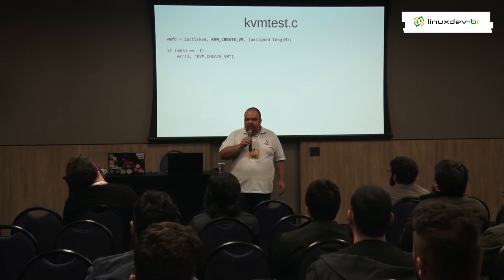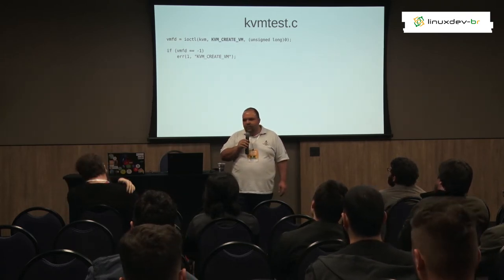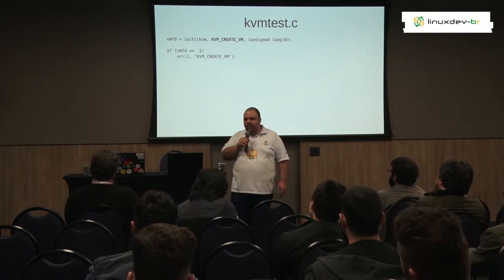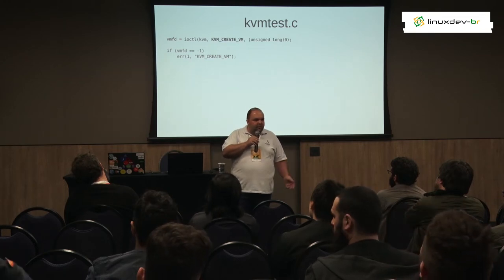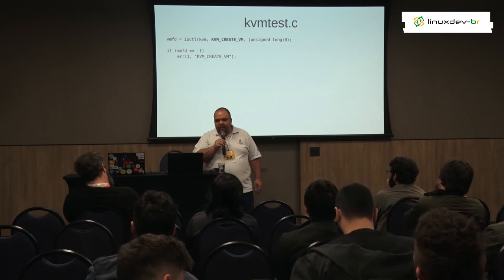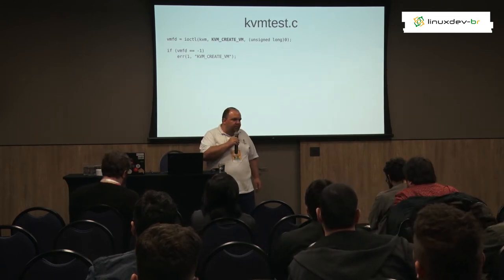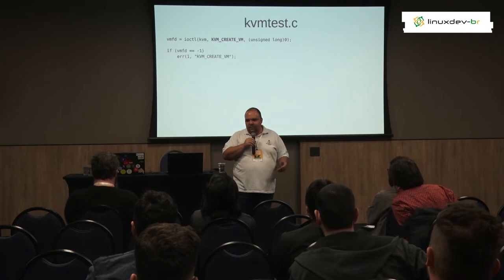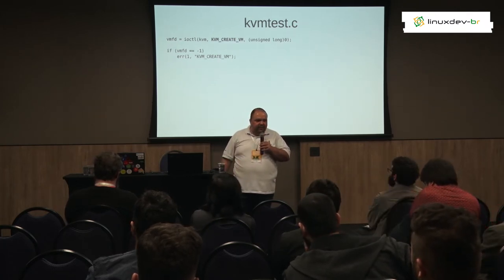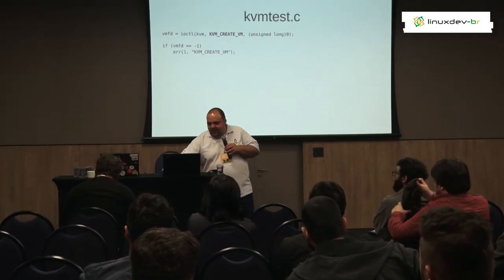The next API call is KVM_CREATE_VM, which affects the whole subsystem of KVM by creating virtual machine structures in the kernel. This API returns a virtual machine file descriptor. You need to keep track of this virtual machine file descriptor, or else you may have open references to your virtual machine alive in the kernel. It returns negative if something went wrong — common for kernel APIs to show user space errors. If it's not minus one, it succeeded.